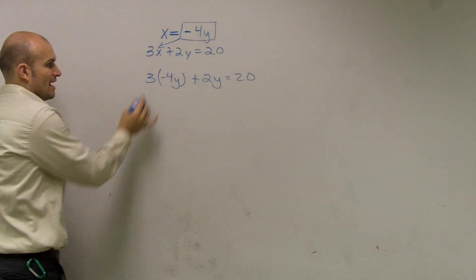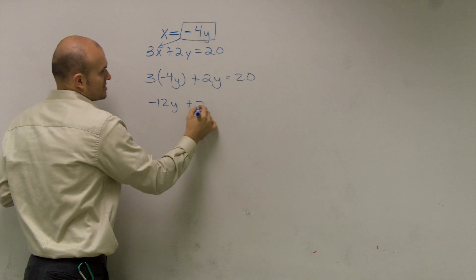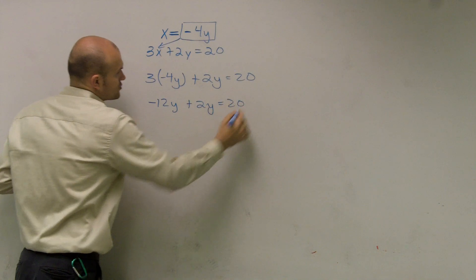So now what I have to do is simplify. 3 times negative 4 is a negative 12y plus 2y equals 20.